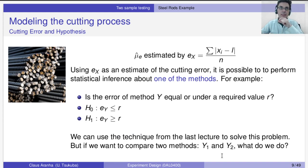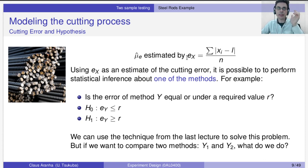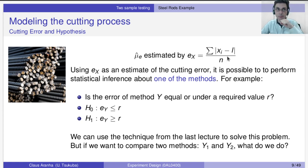This gives us a mean cutting error. Mu_e is the real cutting error of the method, and the sample average is our estimate of it. Now that we have this, we can start thinking about statistical inferences.